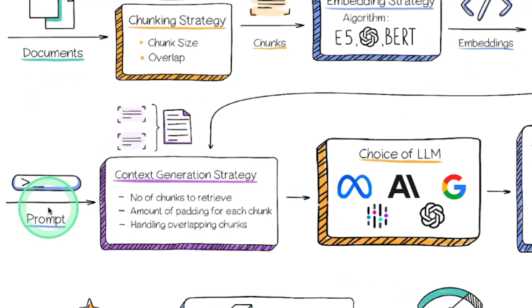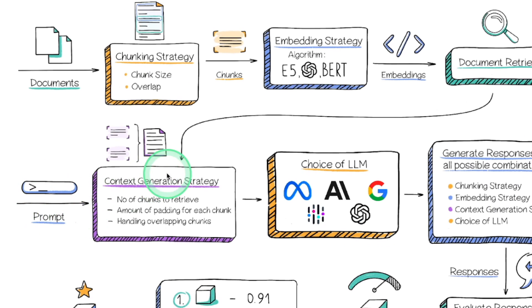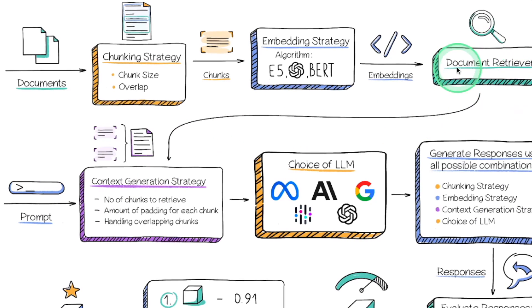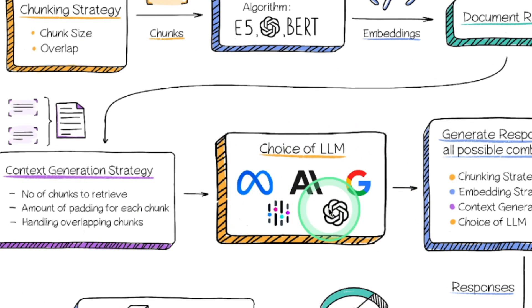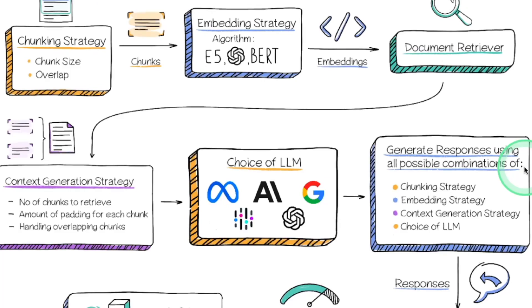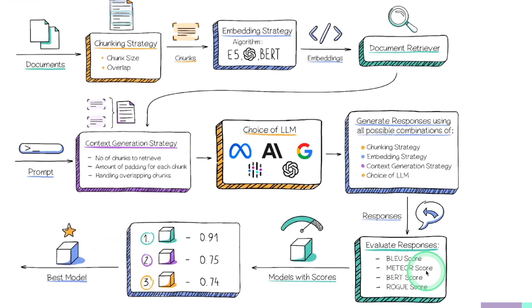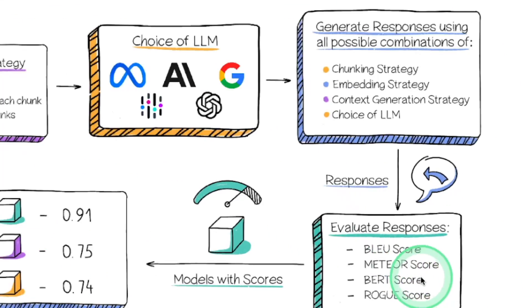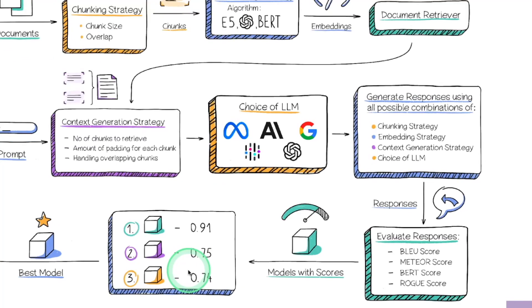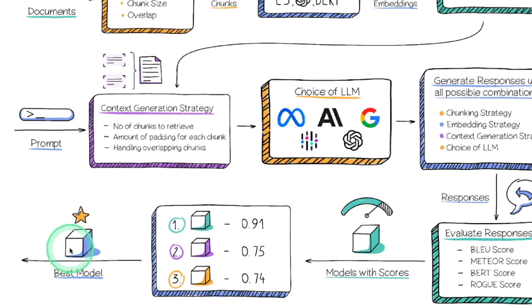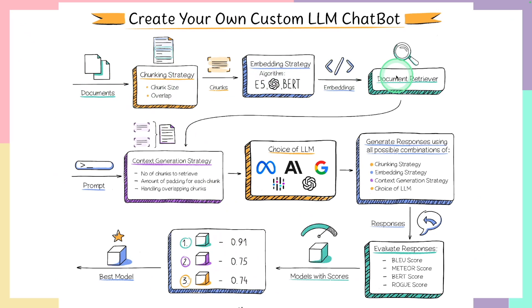Step number two: when the user asks a question, based on the question, relevant information is pulled from the database, then that information is sent to the large language model. Here we can choose any large language model of our choice. Then a response is generated, and that response is evaluated with various scores. Comparing those scores, we can choose the best model. So when you consider this whole pipeline — that is document ingestion, then the user asking a question, generating a response, and finally model evaluation.